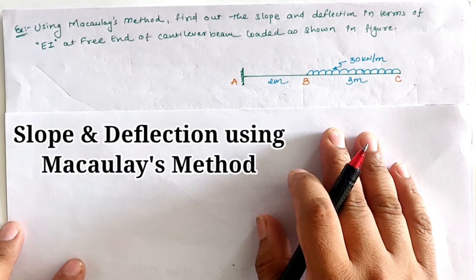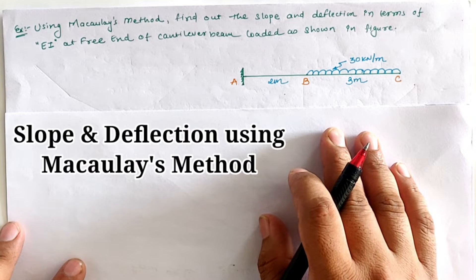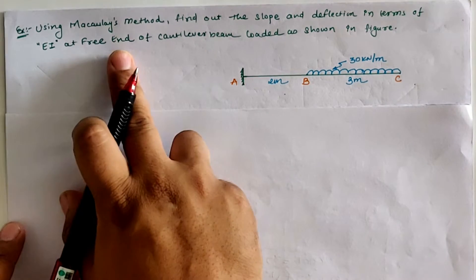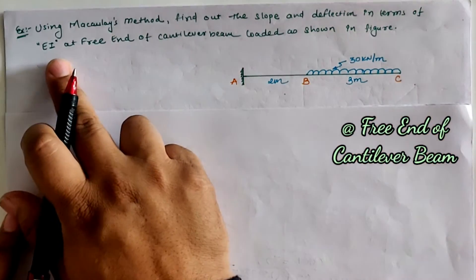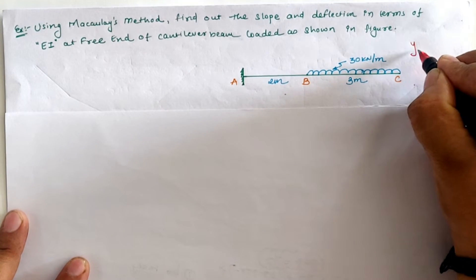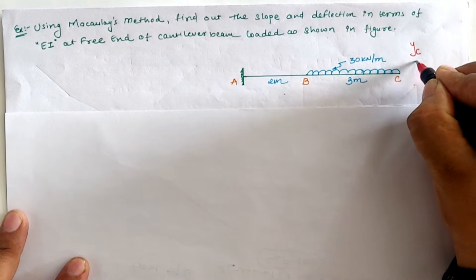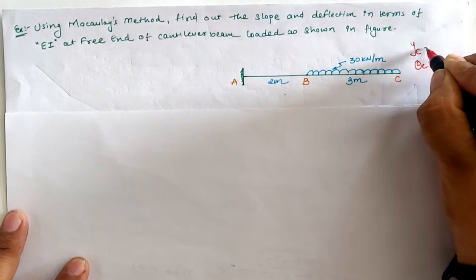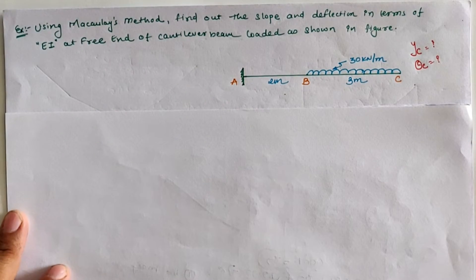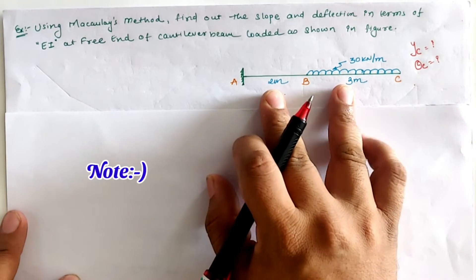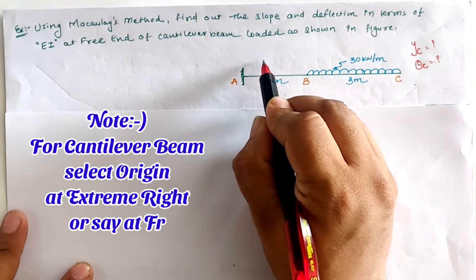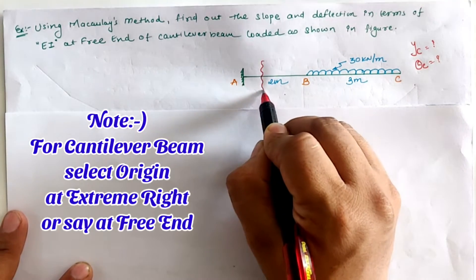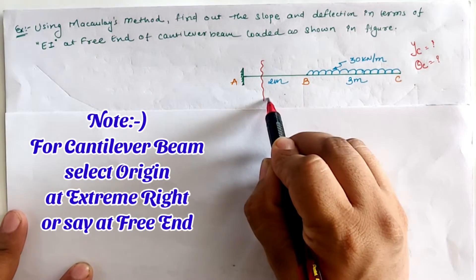Hello friends, today we are going to analyze a given cantilever beam using Macaulay's method. According to the method, we have to calculate slope and deflection in terms of EI at the free end — that is, deflection as well as rotation at location C using Macaulay's method. The section is taken at the last portion, and since we have a cantilever beam, we take the section at a location between A and B, taking the origin at location C.